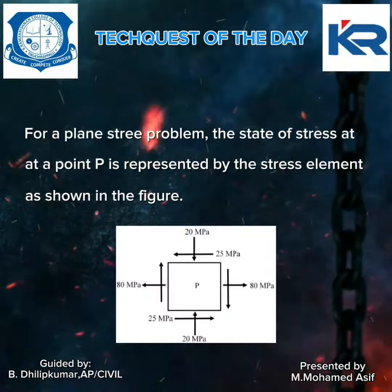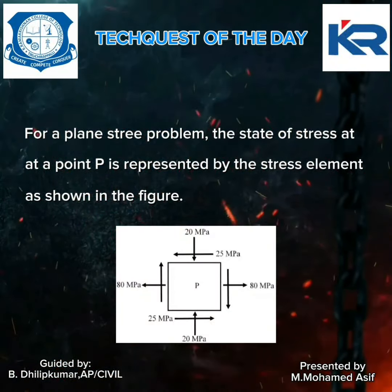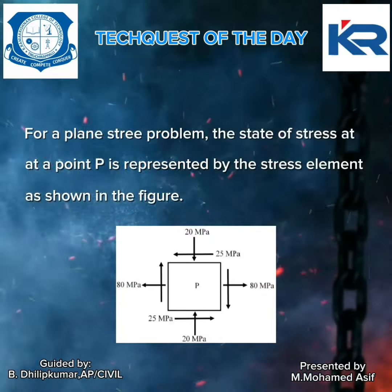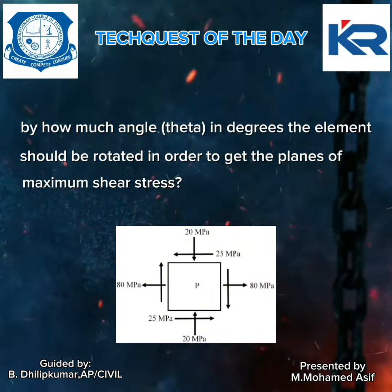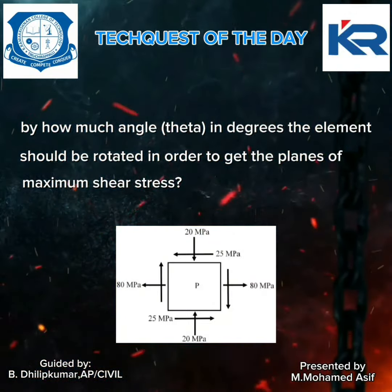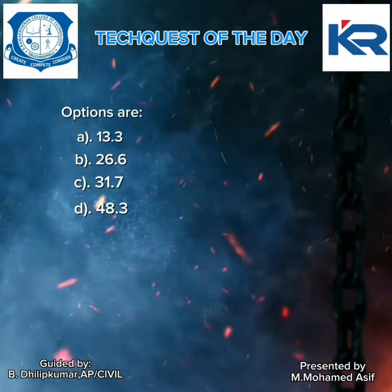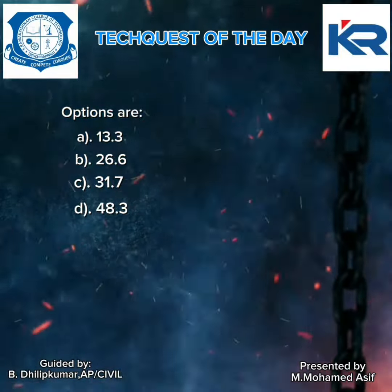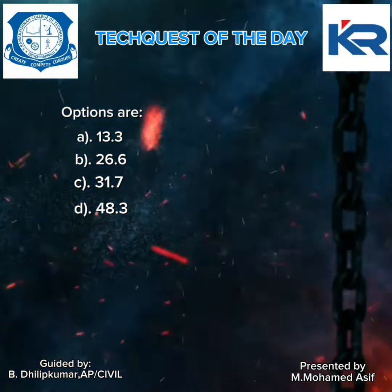Request of the day: a plane stress problem. The state of stress at a point P is represented by the stress element as shown in the figure. By how much angle theta (in degrees) should the element be rotated in order to get the planes of maximum shear stress? The options are: option A 13.3, option B 26.6, option C 31.7, option D 48.3.